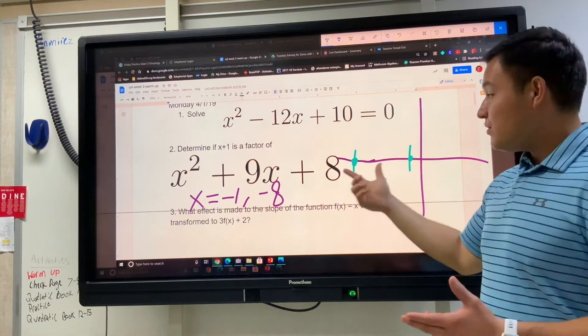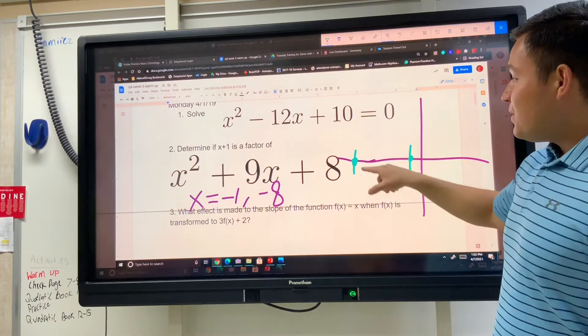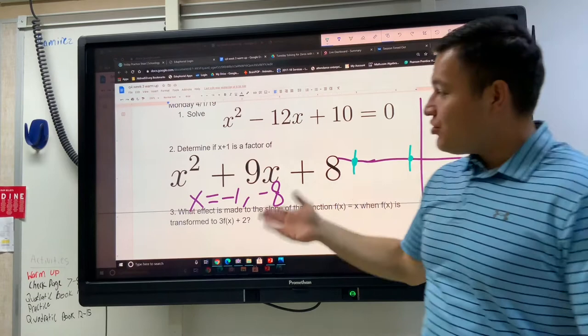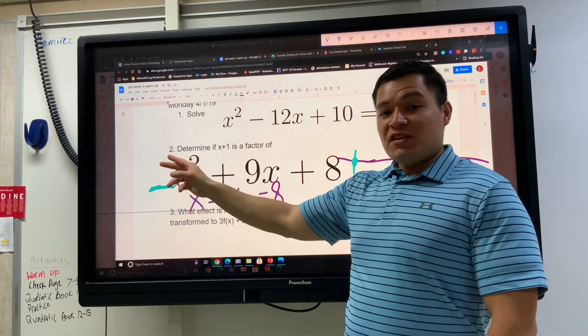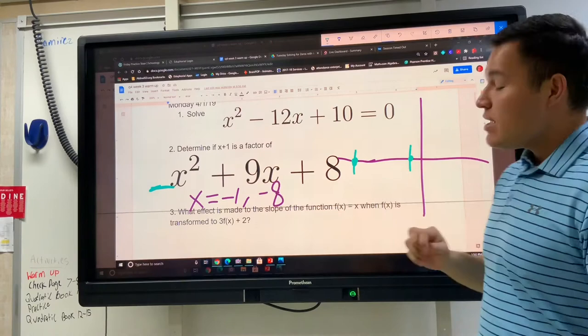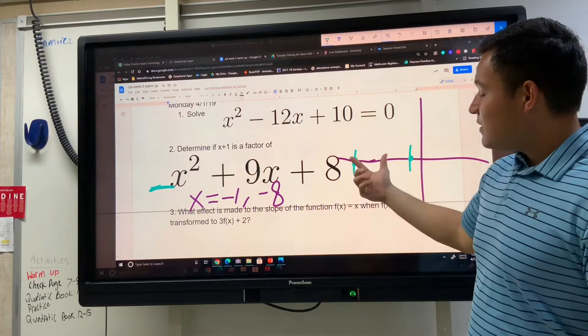You should also know that parabolas are symmetrical, so that means if these are the two roots, that means that those are the two solutions, that means that the shape of the parabola needs to go through these two intersection points. And to determine if the parabola is going to open downwards or upwards, you should know that we're going to look at the a value.